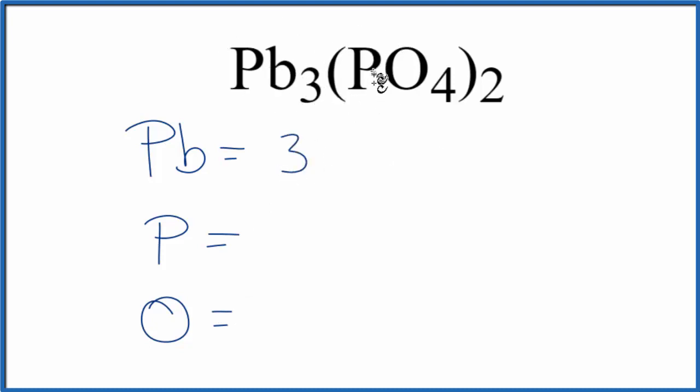For the phosphorus, there's nothing written. When that's the case, we assume this to be 1. But the phosphorus is in the parentheses, and we multiply everything in the parentheses by the subscript of 2. 2 times 1, 2 phosphorus atoms.